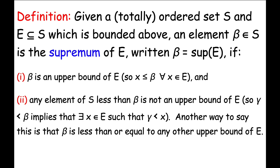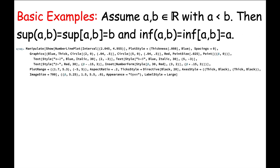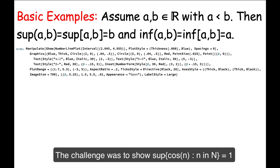The definition of the infimum, or inf, of a set E which is bounded below is completely analogous, but instead of getting the least upper bound of E, we would be getting the greatest lower bound of E. In the previous video, Part 1.3, we considered both basic examples of sups and infs, and a pretty challenging example that was pretty interesting as well. You'll want to make sure you watch that. In this video, however, we'll keep our examples more basic.